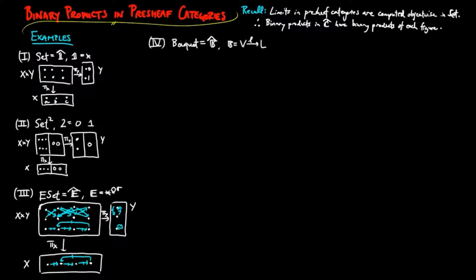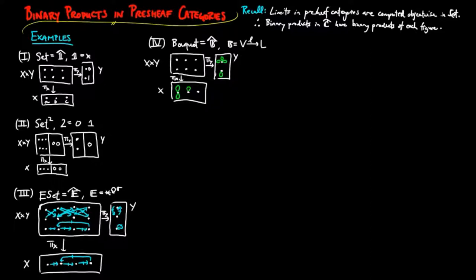If we are given a bouquet X with three flowers — where the first flower has two petals, the second one petal, and the third with no petals — and also a bouquet Y with two flowers, the first with three petals and the second with one, the product of X and Y is a bouquet with six — three times two — flowers. The top row has a flower with six (two times three) petals, the second with three (one times three) petals, and the third with no petals (zero times one). The second row is a copy of X.